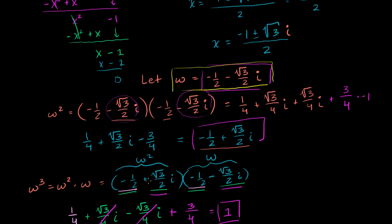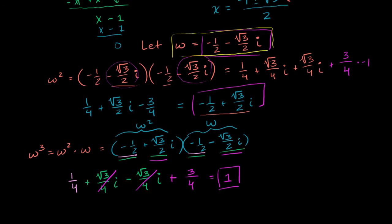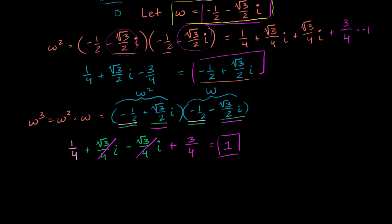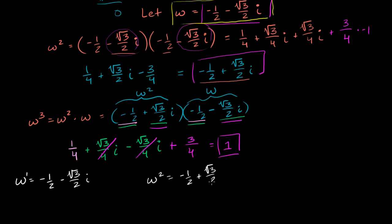It shows you sometimes my brain gets into a rut and does stuff it doesn't have to do. But we multiplied through to show that omega cubed is definitely equal to 1. So we're able to set up a situation we'll use for the next part of the problem. Omega to the first power is equal to negative 1/2 minus the square root of 3 over 2 times i. Omega squared is equal to negative 1/2 plus the square root of 3 over 2 times i. And omega cubed is equal to 1.